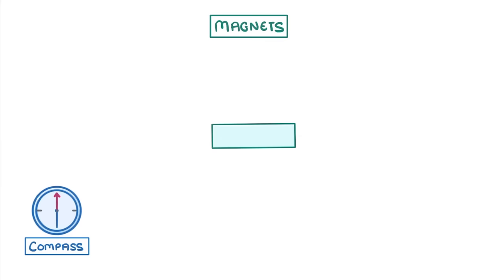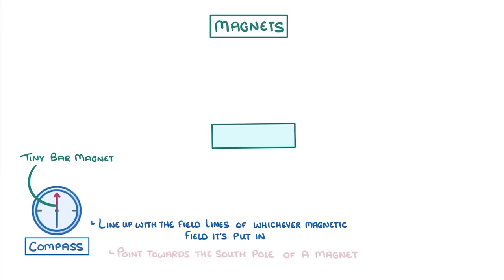This works because the needle of a compass is actually a tiny bar magnet and will always line up with the field lines of whichever magnetic field it's put in, and it will also always point towards the south pole of a magnet.